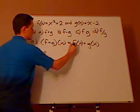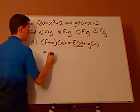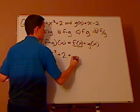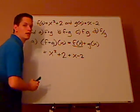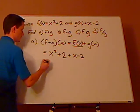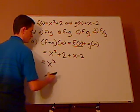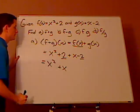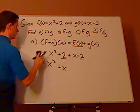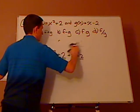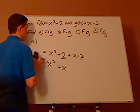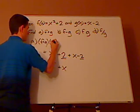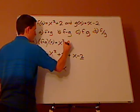You take your f of x and replace it, so it's x squared plus 2, plus g of x which is x minus 2. Then you simply combine like terms: the constants cancel out, leaving x squared plus x. So f plus g of x equals x squared plus x.